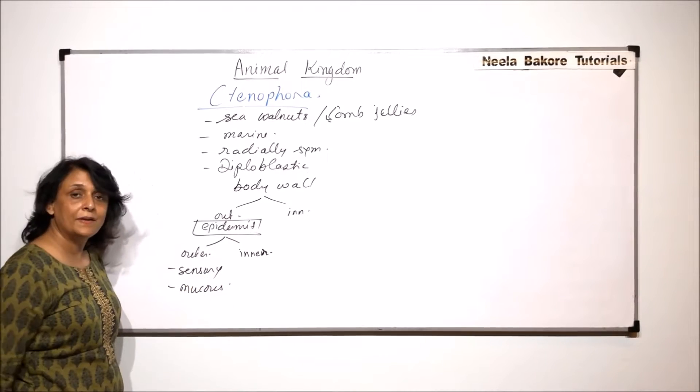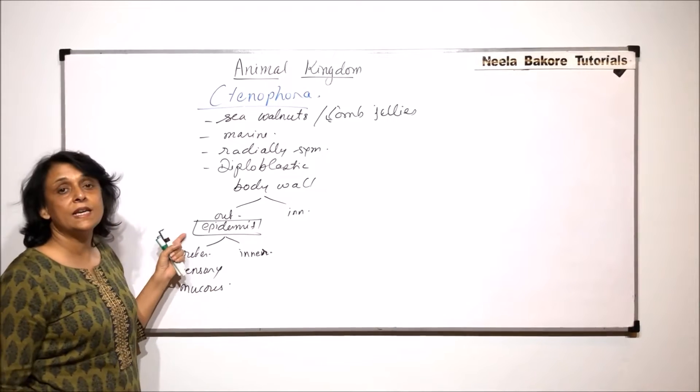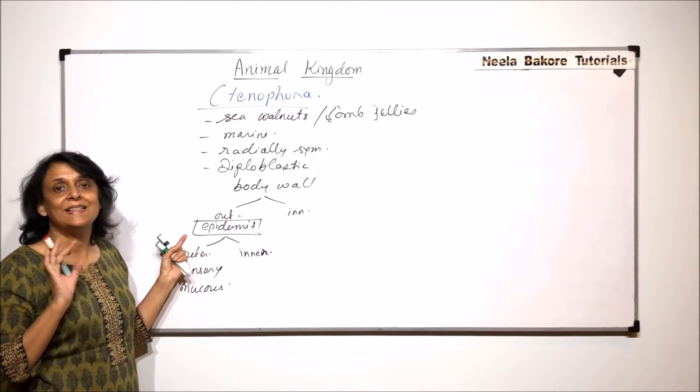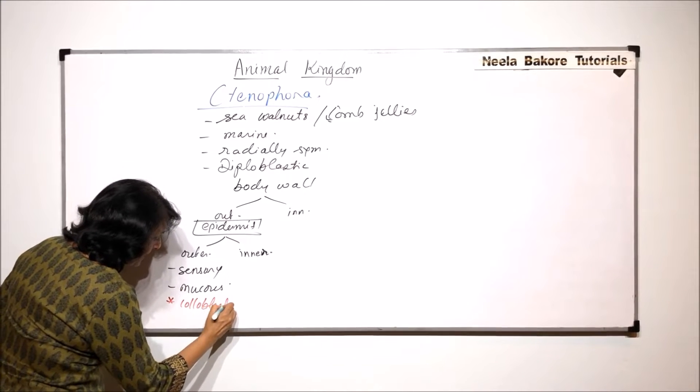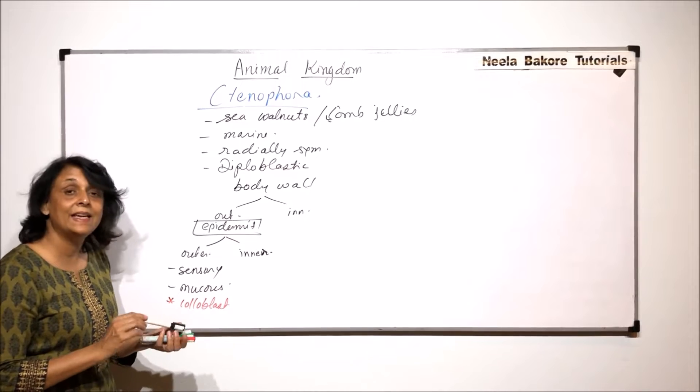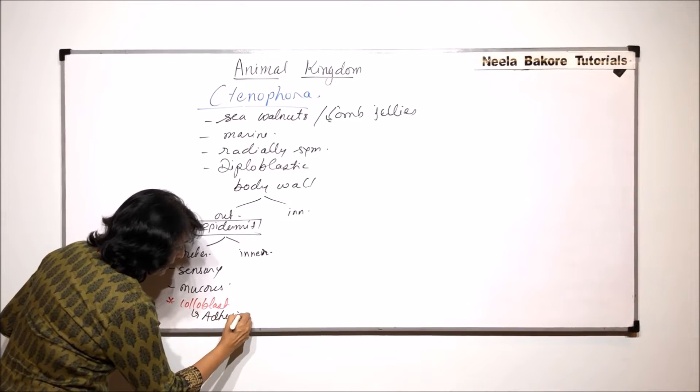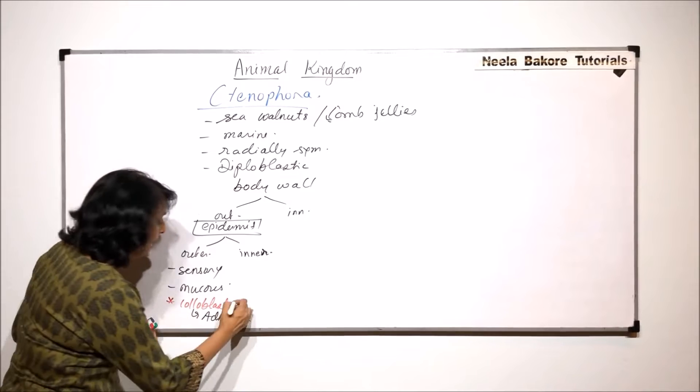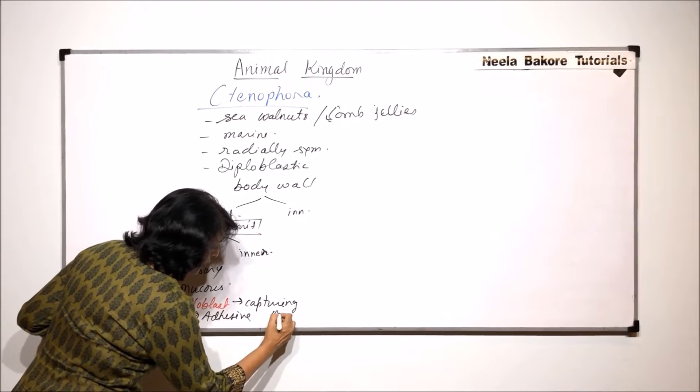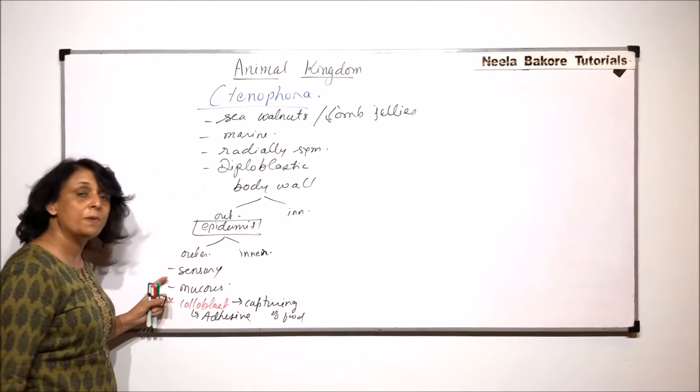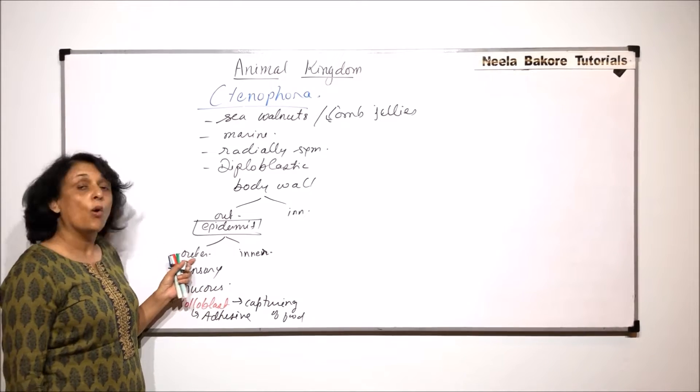So mucus secretory cells and special cells which are present in specific areas like tentacles - those cells are known as coloblasts and these cells are adhesive. That means they help in capturing of food. They would be found only on tentacles, not on the rest of the body.